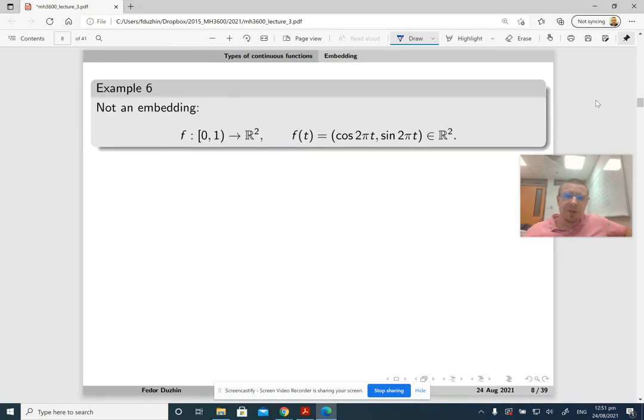But be careful because if instead you use the same formula but now your t is not an element of the circle but rather if your t is an element of the half-open interval, then this is not going to be an embedding. Of course it is going to be one-to-one but it is not an embedding because the inverse function is not continuous.